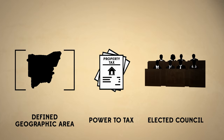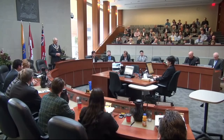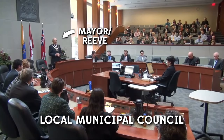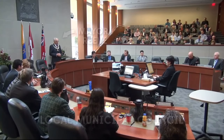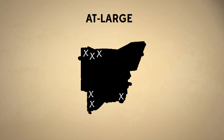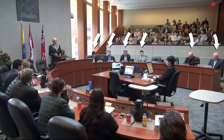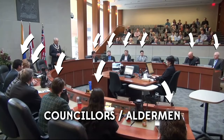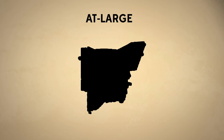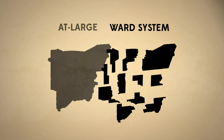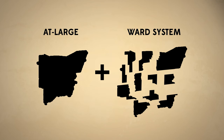The elected council of lower-tier and single-tier municipalities is called a local municipal council. The head of the local council is called a mayor or a reeve. They are elected at large, which means by all eligible voters within a municipality. Local council members are called councillors or aldermen, and they can be elected at large or by using a ward system that breaks a municipality down into smaller areas. Some municipalities use a mix of both at-large and ward systems.